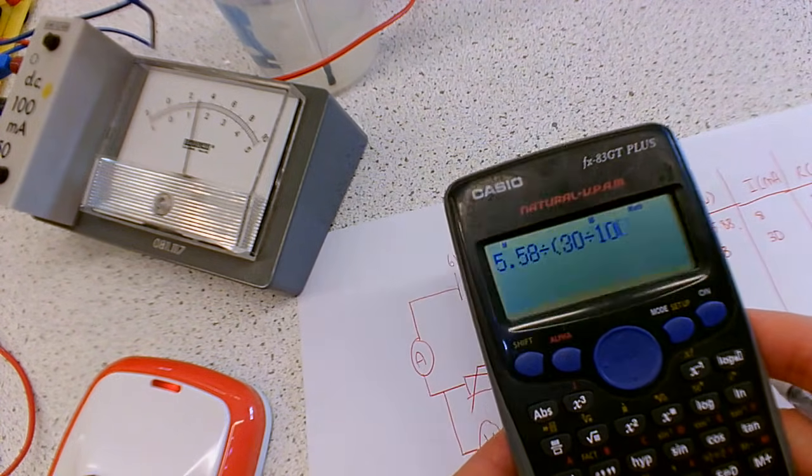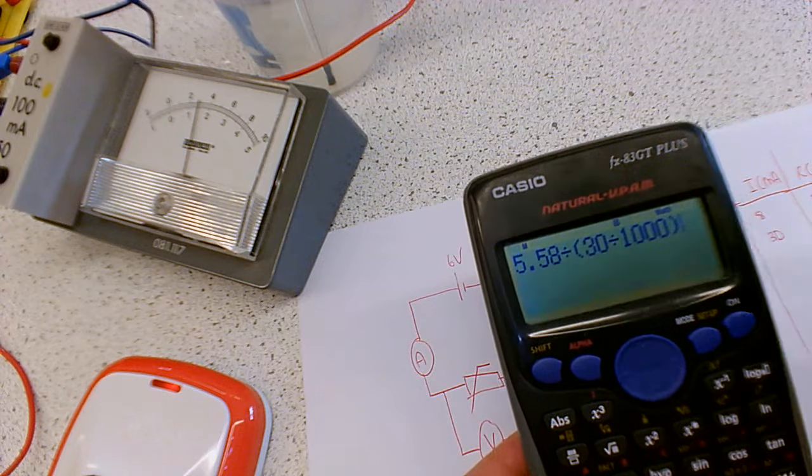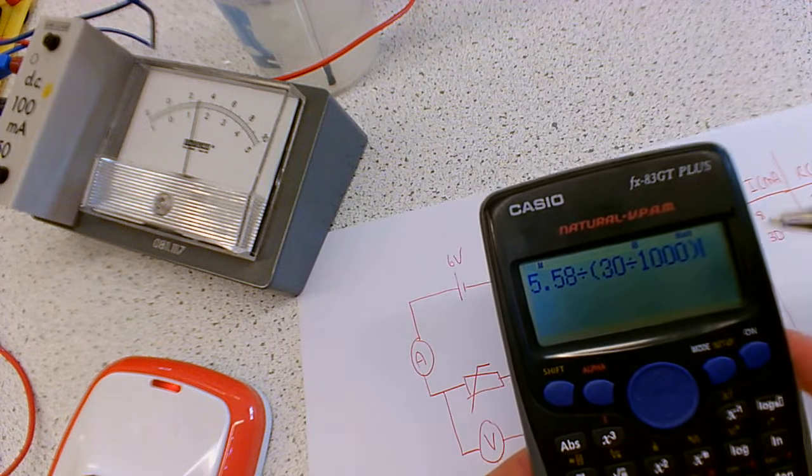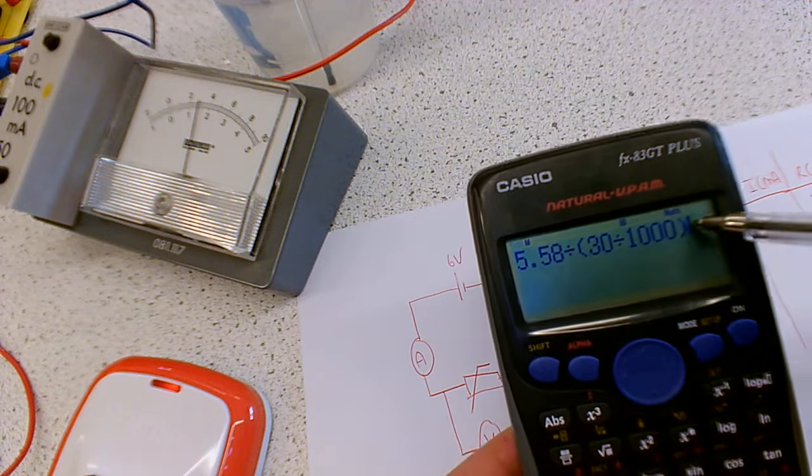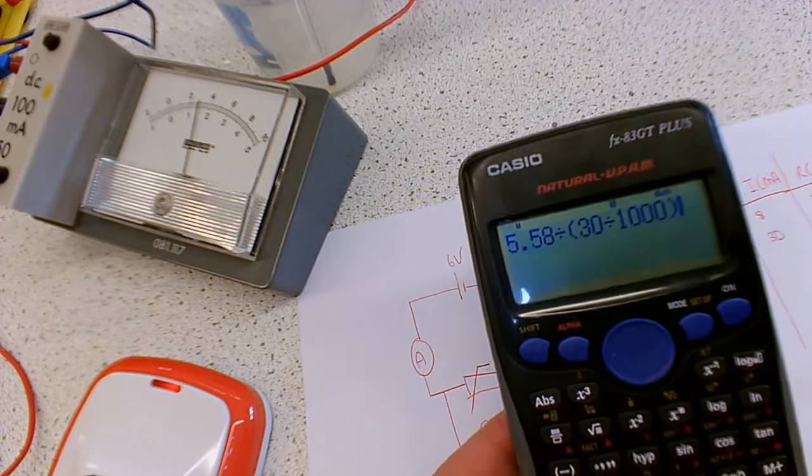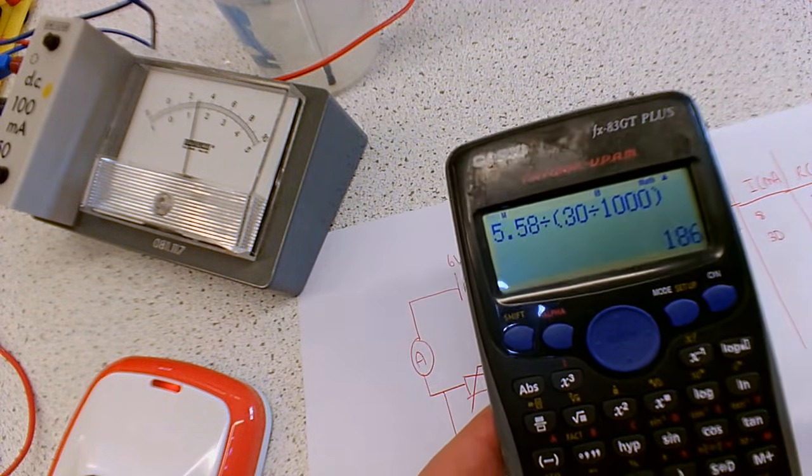because we need to do 30 divided by 1000, because remember the 30 is in milliamps. We need this in brackets because we want to make sure that the calculator does this part first, and then does 5.8 divided by it.